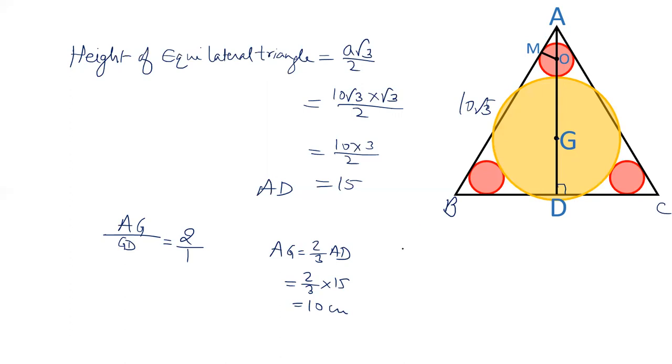Now let's check triangle AOM. Remember we have calculated AG as 10 centimeter. Now in triangle AOM, angle M is 90 degrees and this angle MAO is 30 degrees. OM is 1 centimeter. Angle OMA is 90 degrees and angle MAO is 30 degrees. So we can apply sine theta.